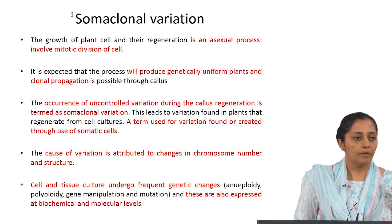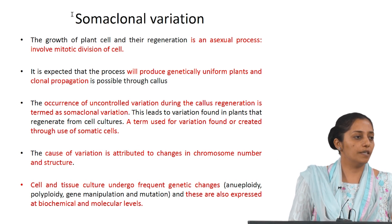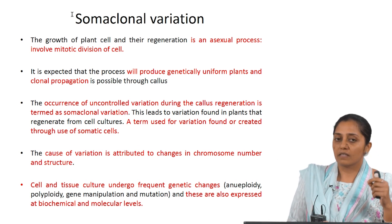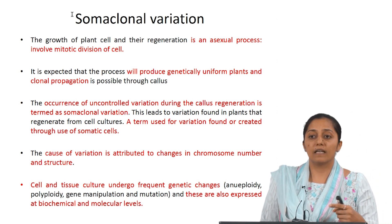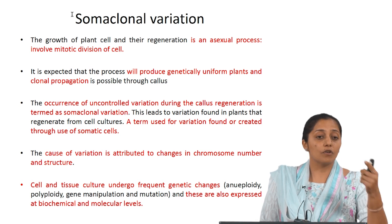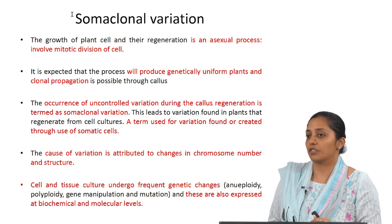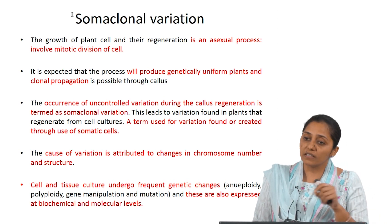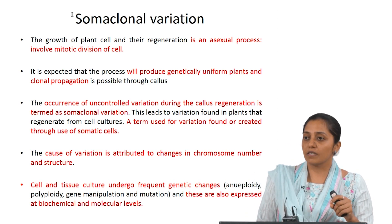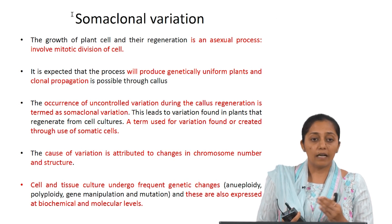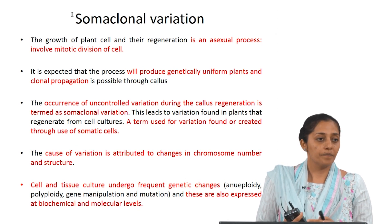Whenever the callus has to form or regenerate into a plant or any organ, the cell has to continuously keep dividing. Every single cell undergoes hundreds of division cycles, finally leading to differentiation and the regeneration process. Because of this rapid multiplication, there is instability in many different forms — ultimately visible in phenotype, in terms of chromosomal instability and genetic instability.